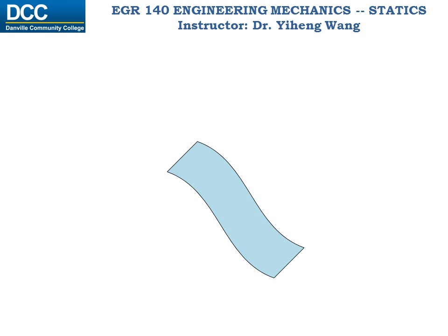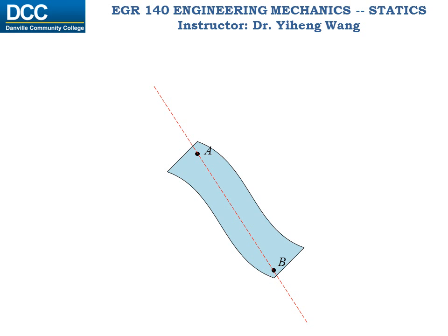Let's look at this member. It is given that forces are only applied on two points on this member, say point A and point B. At first, we don't know what directions these forces are in, so let's draw them in arbitrary directions. But we know that two points define a line, and we can always draw a straight line connecting point A and point B. And since we can also choose to set up the coordinate system as we want, why don't we set it up with the x-axis along this line and the y-axis perpendicular to this line. Any arbitrary force in this plane can be resolved into an x-component force and a y-component force.